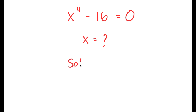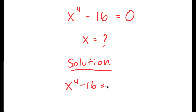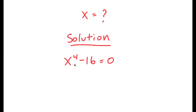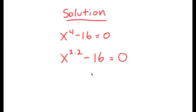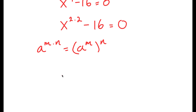For my solution, what I'm first going to do is rewrite x to the power of 4 as x to the power of 2 times 2. So I have x to the power of 2 times 2 minus 16 is equal to 0. Now, if I have something in the form a to the power of m times n, this is equal to a to the power of m to the power of n. So x to the power of 2 times 2 is equal to x to the power of 2 to the power of 2.